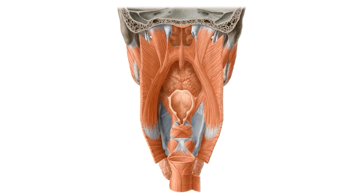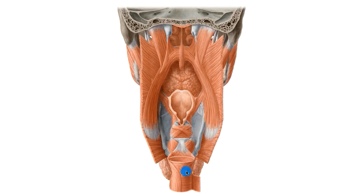Now the pharynx is a muscular column that links the nasal and oral cavities to the larynx, which you see here, also known as the voice box. It also connects to the esophagus, starting at your neck.